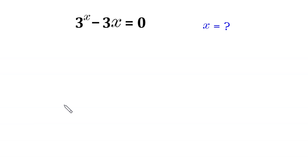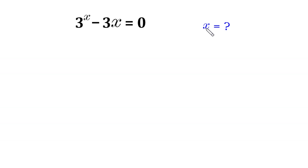Hello, welcome to how to solve this very nice exponential equation: 3 to the power x minus 3 times x is equal to 0. We need to find all possible values of x.